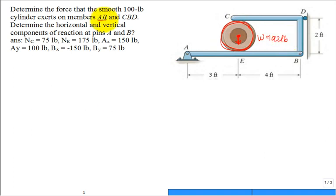And where is member A to B? That would be this horizontal member. It's pin connected at A and pin connected at B, and the 100-pound cylinder sits at location E, which is 3 feet from A and 4 feet from B.